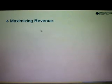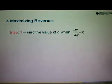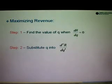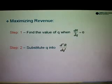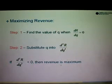Next, in order to maximize the revenue, same thing. Step number 1, we need to find the value of Q when the marginal revenue is equal to 0. Then from the value of Q, we differentiate DR/DQ to give us D²R/DQ². Substitute the value of Q from step 1 into D²R/DQ². And if the answer is less than 0, or negative, then the revenue is said to be maximum.